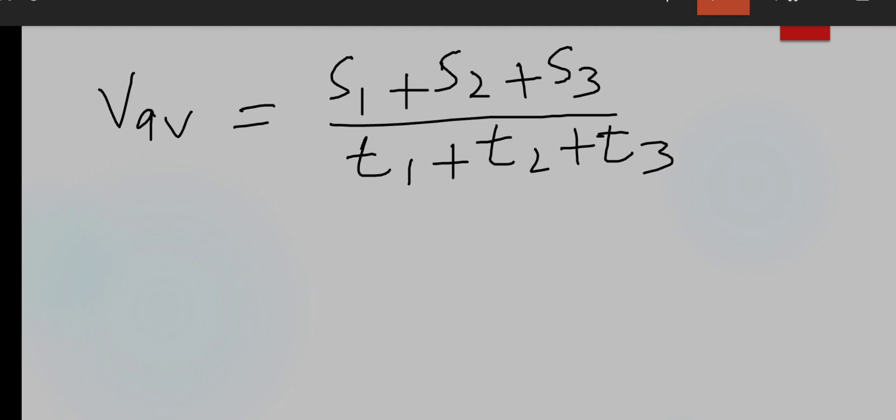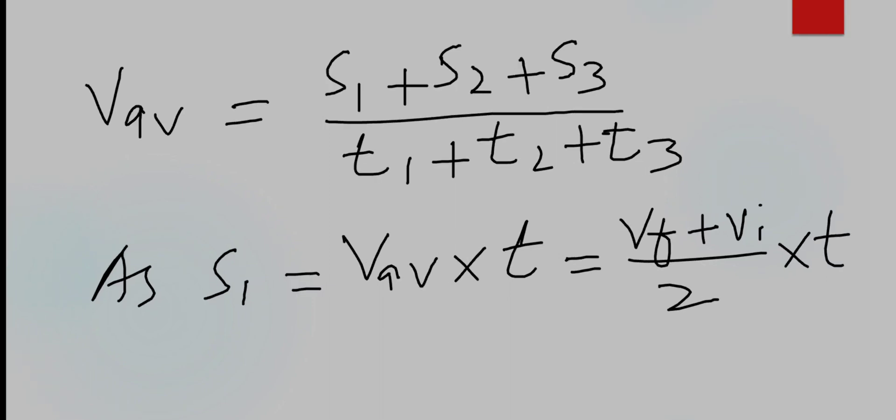So first of all we will calculate S1, S2, and S3. S1 is equal to average speed means velocity into time. So average speed is equal to VF plus VI upon 2 into T.